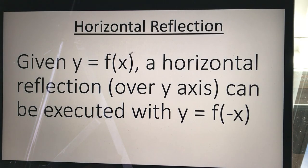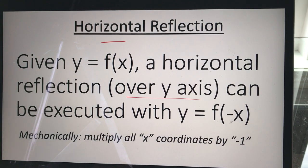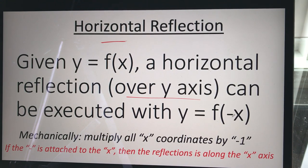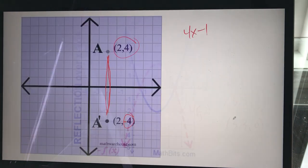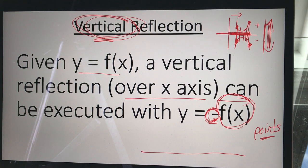Secondly, the horizontal reflection — that's left and right. Given a function y = f(x), a horizontal reflection over the y-axis is executed with y = f(-x). In this case the negative is attached right to the x. Mechanically, we multiply all the x-coordinates by negative one. To keep this straight: if that negative sign is attached right to the x, it's a horizontal reflection.